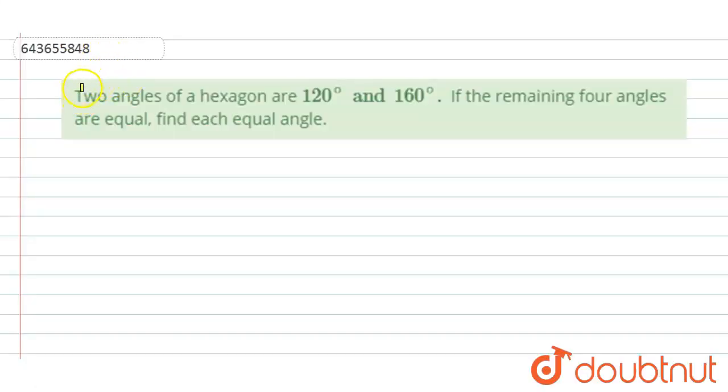Hi, welcome to this video. The question is: two angles of a hexagon are 120 degrees and 160 degrees. If the remaining four angles are equal, find each equal angle.